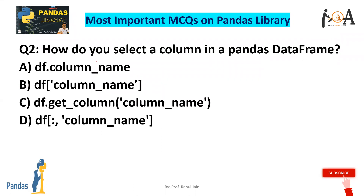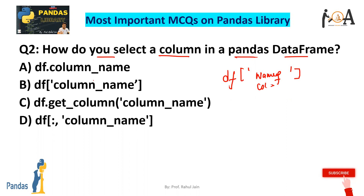Question 2: How do you select a column in a pandas DataFrame? For selecting any particular column, we need to use df and thereafter in square brackets under single quotes, we need to give the name of the column. So option B is the correct answer: df followed by square brackets with the column name in single quotes. This is how we select a column in a pandas DataFrame.